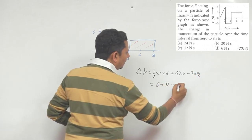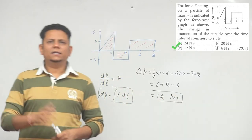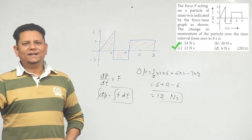Plus 12 minus 6, so our option becomes 12. So based on this, option C, which is 12 newton-second, would be the right answer.